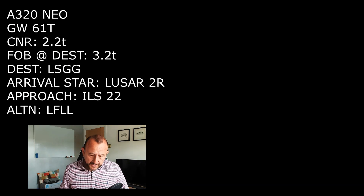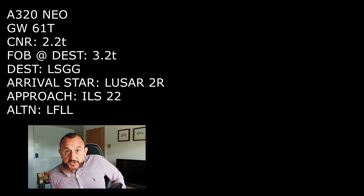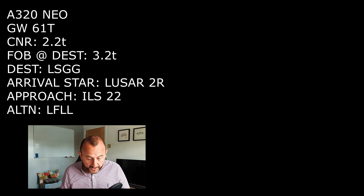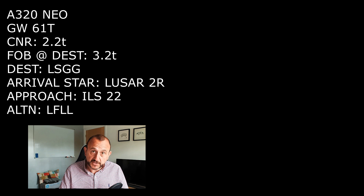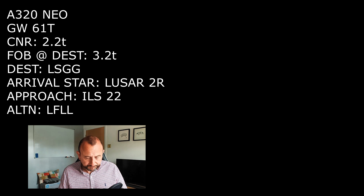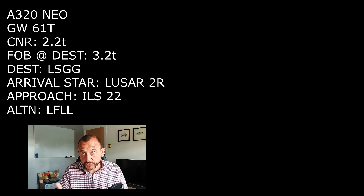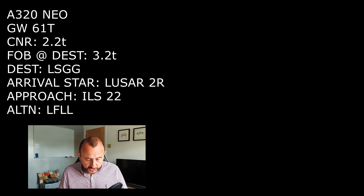Let me give you some live data as it were, to what you can expect for the arrival so you can plan accordingly. The aircraft is an Airbus A320. The gross weight will be 61 tonnes. Your arrival CRN is 2.2. There's no flight plan associated with this. Your destination is Geneva and your alternate is Lyon. The fuel on board at destination is 3.2 tonnes, and with a CRN of 2.2 that gives you an extra tonne. You can expect an ILS approach into Geneva runway 22.